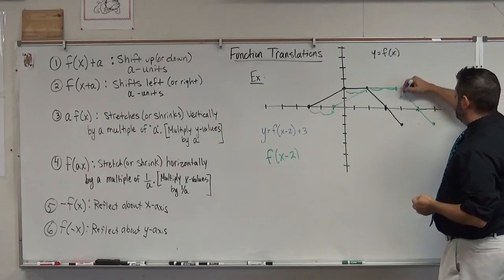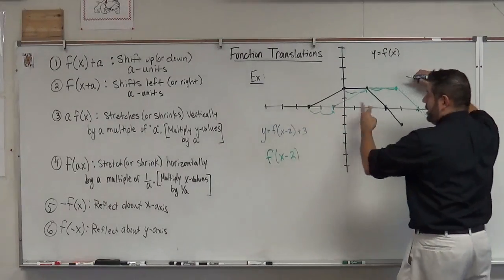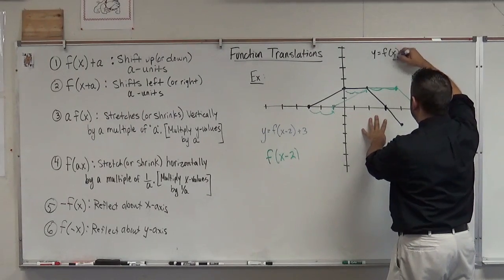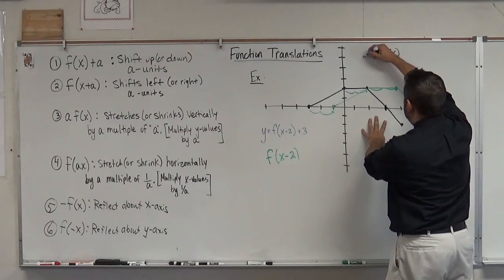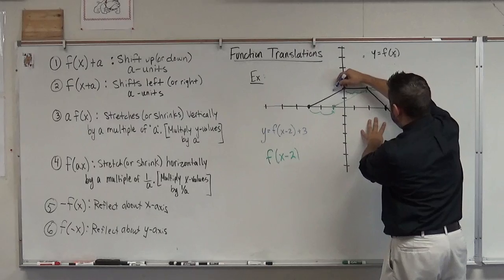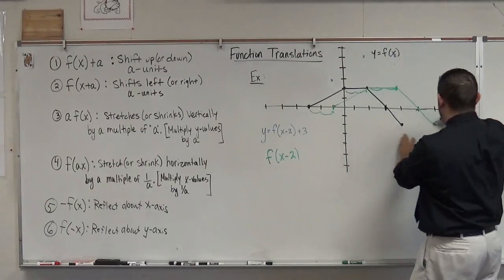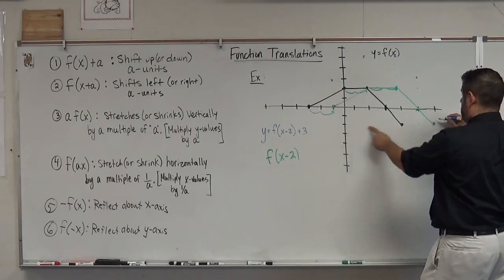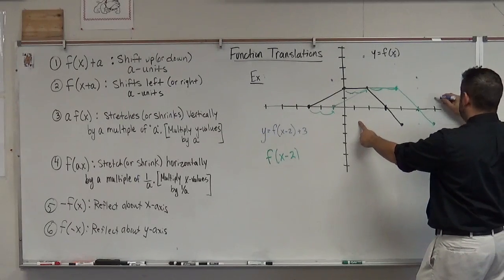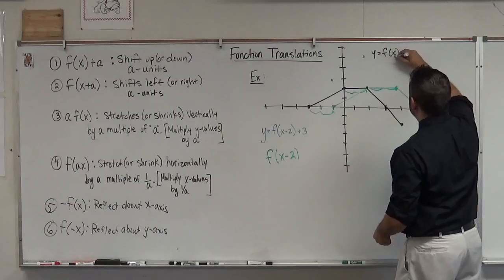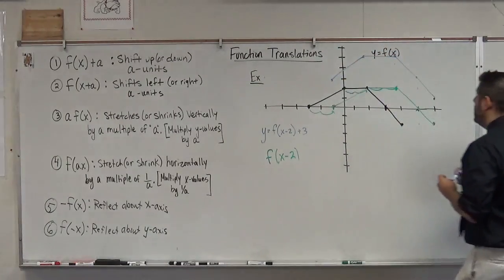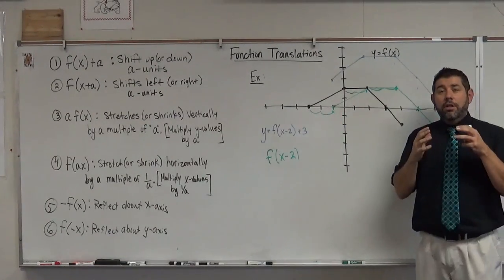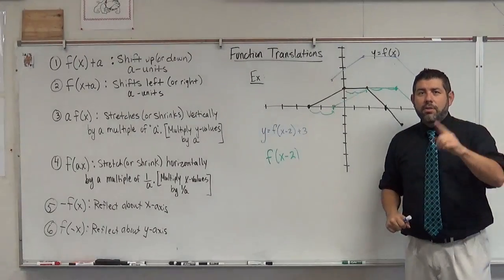Notice that when I shifted it over, I didn't change the Y values at all. Now I'm not changing the X values, but I'm going to shift up 3. So I'm taking each point and moving it up 1, 2, 3 units. And that right there is my graph shifted over to the right 2 and up 3.